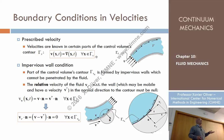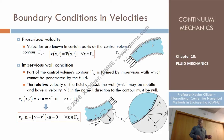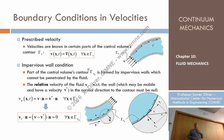Like in solids, where we called these boundary conditions gamma_U, here we call it gamma_V — the part of the boundary where we know, or assume known, the velocity.